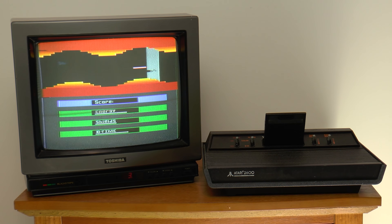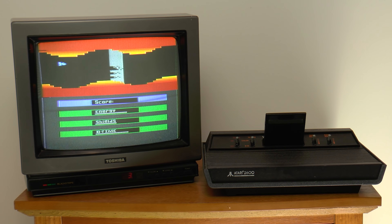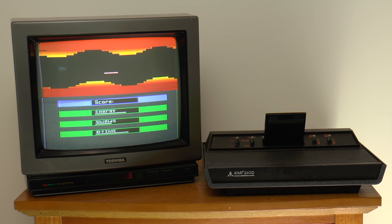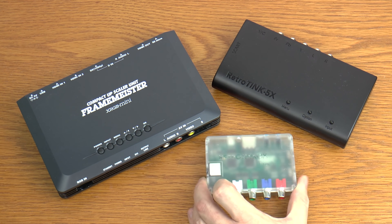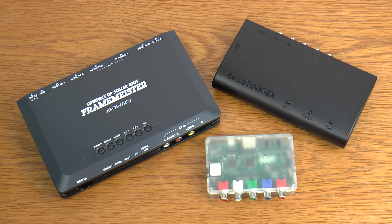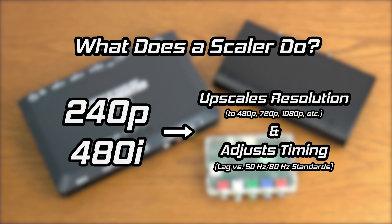You own an Atari 2600 and you want to hook it up to something other than a CRT television for video capture or gameplay. You elect to use an upscaling device like a Framemeister or a RetroTINK. The goal of devices such as these is to take an older video signal like 240p or 480i and convert it to a higher resolution more compatible with modern televisions and capture devices. An external scaler serves as a bridge between old and new.